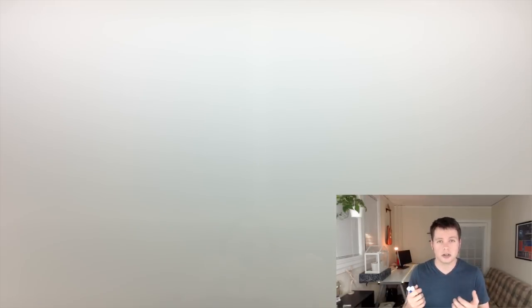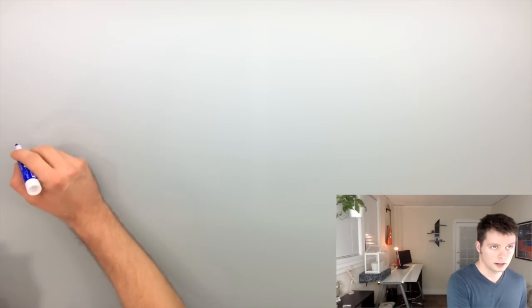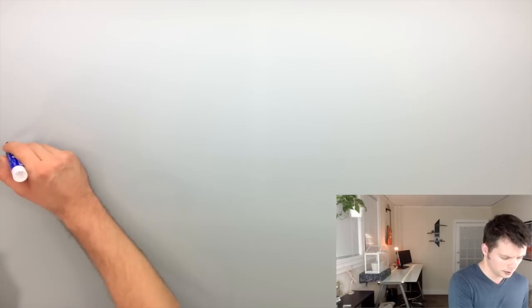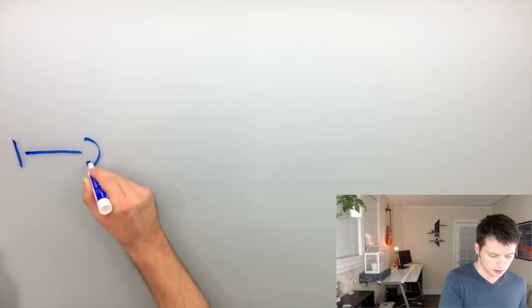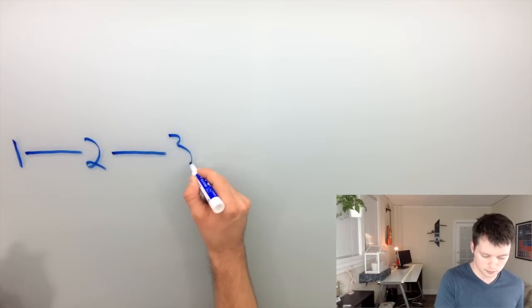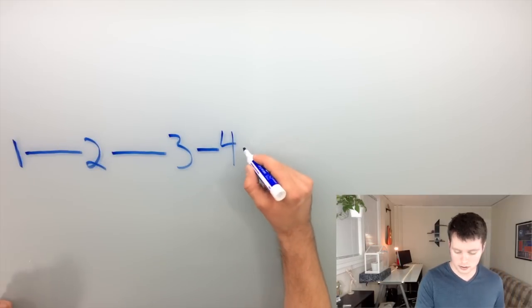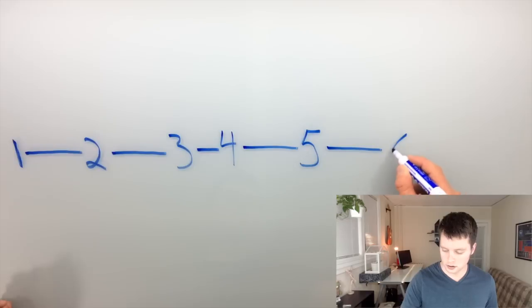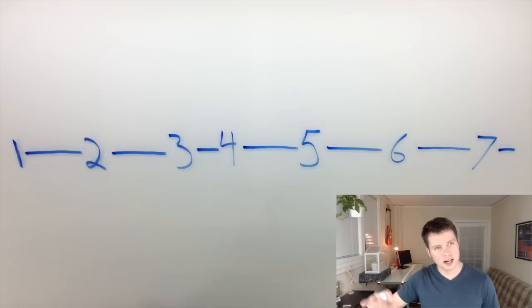We're going to start by comparing a major scale with a Lydian mode. A major scale looks like this: you start on a note, go over a whole step to your second note, another whole step, a half step to note number four, whole step to note number five, whole step, whole step, and then a half step takes you back to where you start. There's a major scale.